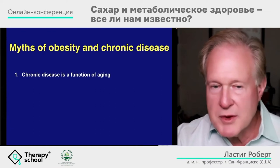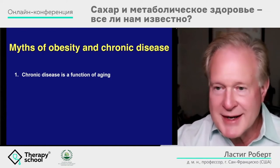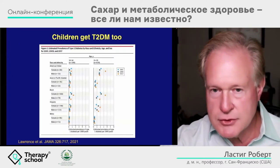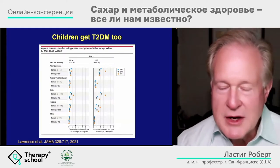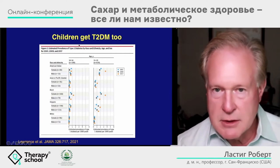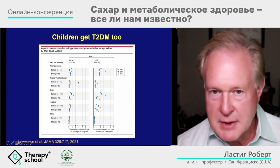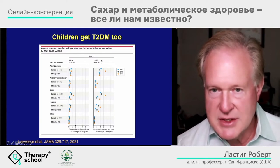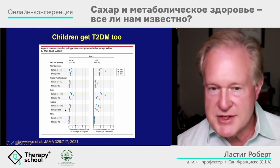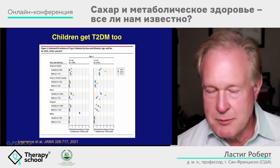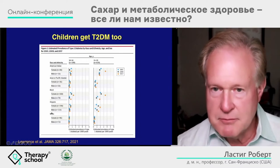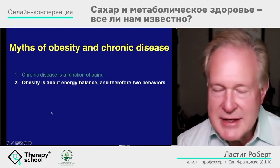Myth number one: chronic disease is a function of aging — you get old, you get sick. This is not true. You get young, you get sick. Here is data from the United States looking at type 2 diabetes in children ages 10 to 14 and 15 to 19, showing an increase from 2001 to 2017 in every demographic group for both type 1 and type 2 diabetes.